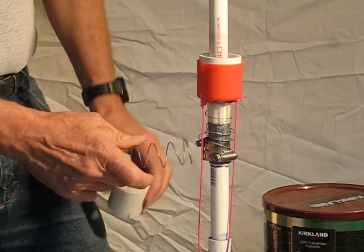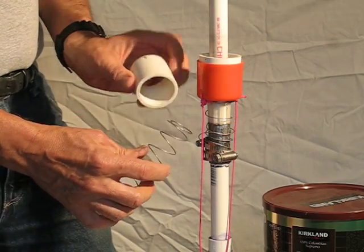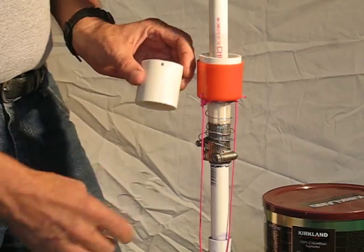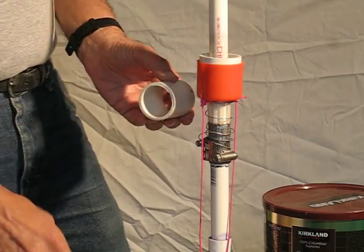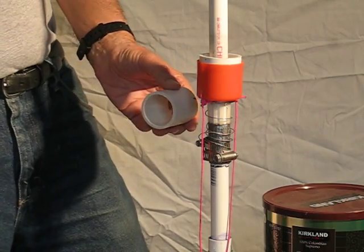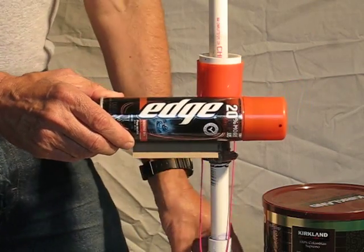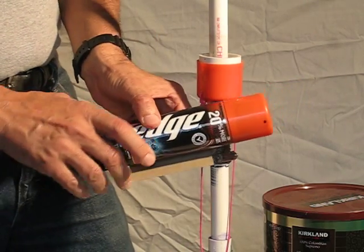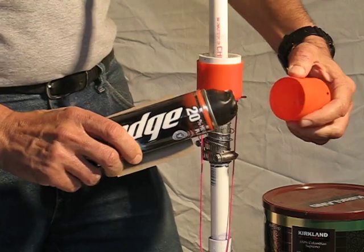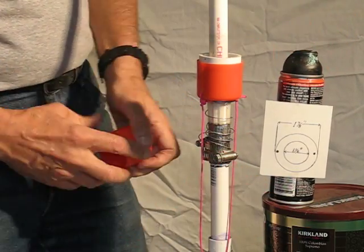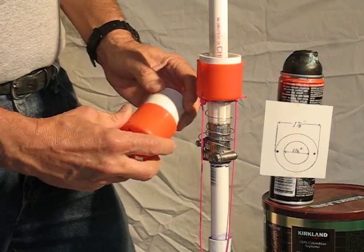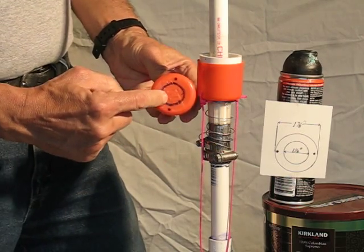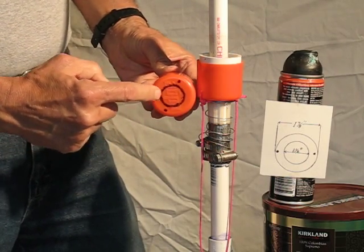Now once you've done that, you're ready to work on the locking collar. Obviously the spring won't hold it up that way. It needs a flange down here. The easiest way to do that is to get a can of Edge shaving cream. And by chance the cap is the perfect size and slips right on.